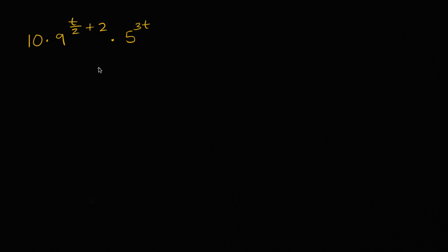What I hope to do in this video is get some practice simplifying some fairly hairy exponential expressions. Let's say that I have the expression 10 times 9 to the t over 2 plus 2 power, times 5 to the 3t. What I want to do is simplify this as much as possible, and preferably get it in the form of a times b to the t.